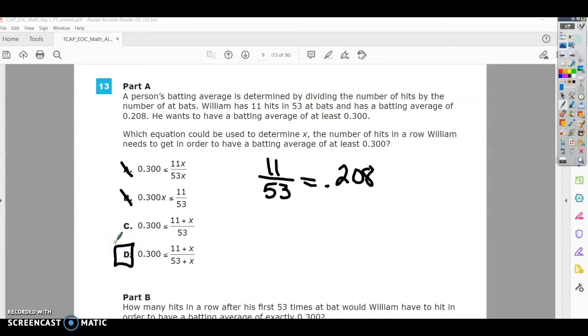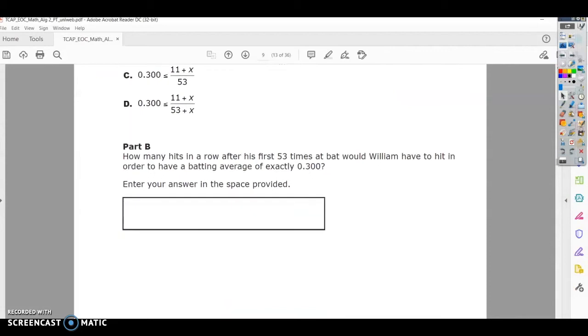We're going to use equation or inequality D, and we're going to look at Part B. We're going to think of it kind of as an equation because it's going to equal or be greater than that. We need it to at least be equal to that. How many hits in a row after his 53rd time at bat would William have to hit in order to have a batting average of 0.3?